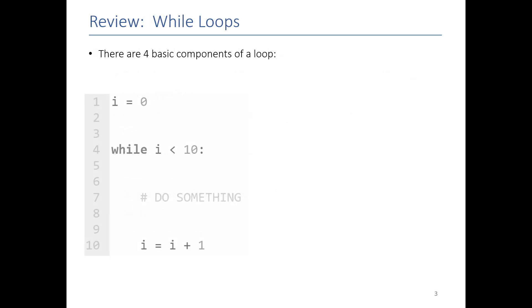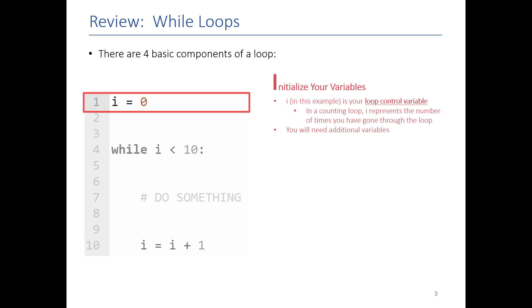To get started, let's remind ourselves of the four basic components of a loop. Remember, we use the mnemonic ITEM to specify those parts. I stands for initializing your variables. We talked about the loop control variable — this is the variable, i in this case, that determines if your loop is going to continue or if it's done.